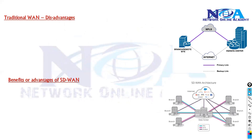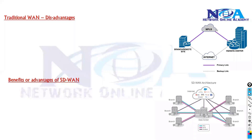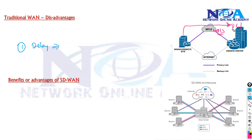In today's network, most applications go over the internet, not over the traditional network, because they are hosted in the cloud. This means from the branch office, we access these applications directly from the internet rather than through the data center. Because of this, traditional WAN adds delay — your normal traffic may use MPLS for connecting to headquarters while cloud-based applications use internet or an alternate path.